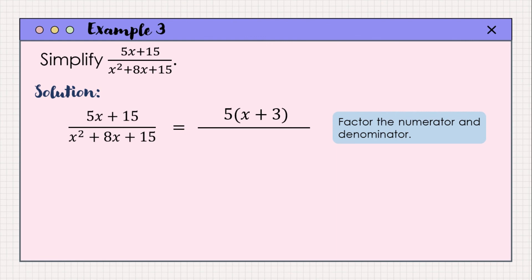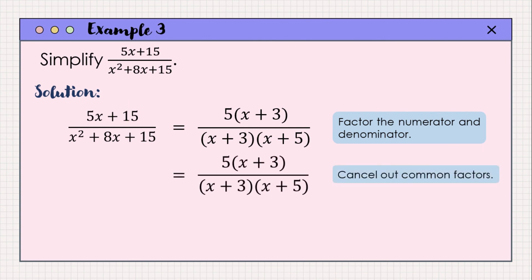For the denominator, x squared plus 8x plus 15 is a quadratic trinomial. Its factored form is written as the product of two binomials: quantity x plus 3 multiplied by quantity x plus 5, where x is the square root of x squared, and 3 and 5 are factors of 15. After writing the factors of the numerator and denominator, we cancel out the common factor, which is quantity x plus 3.